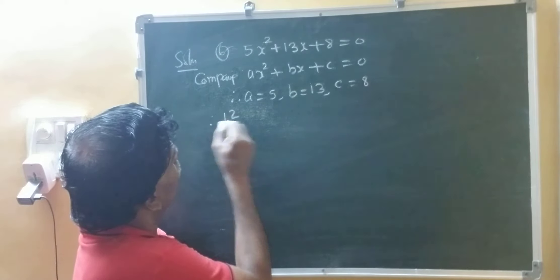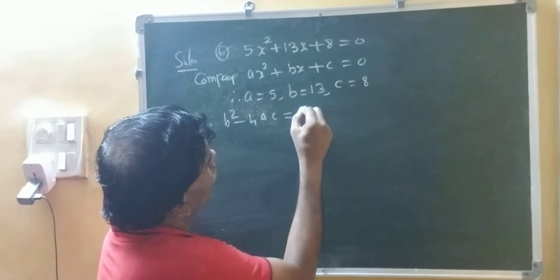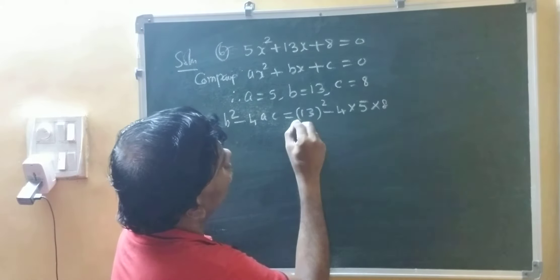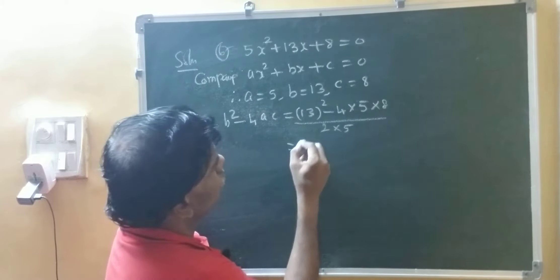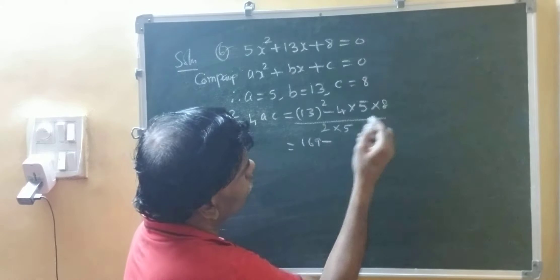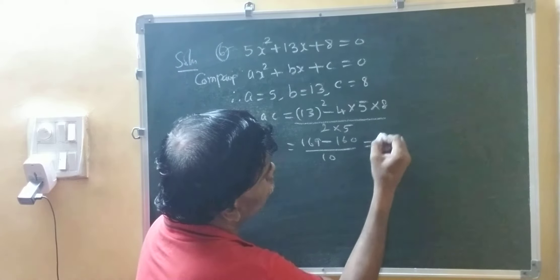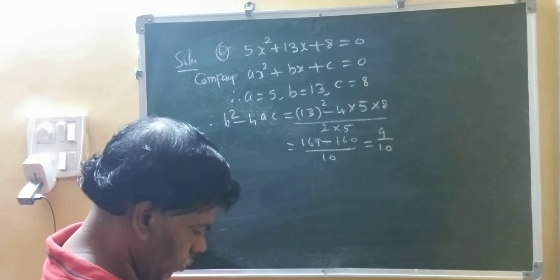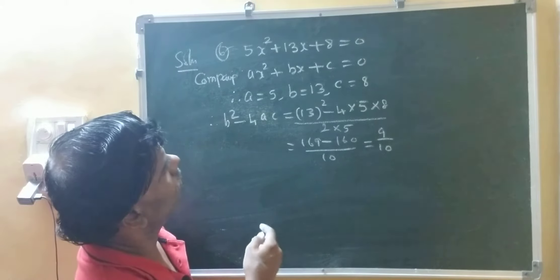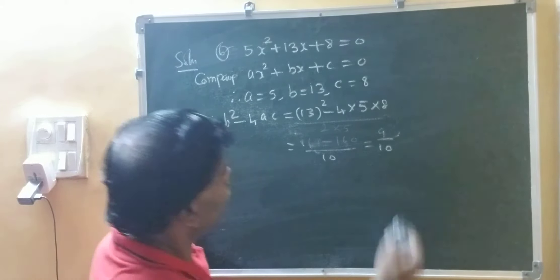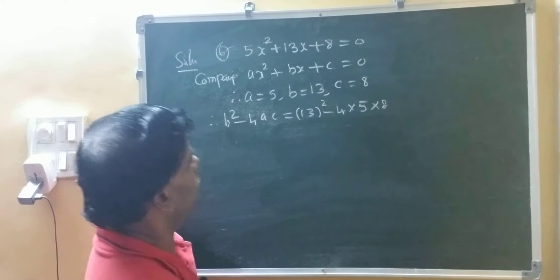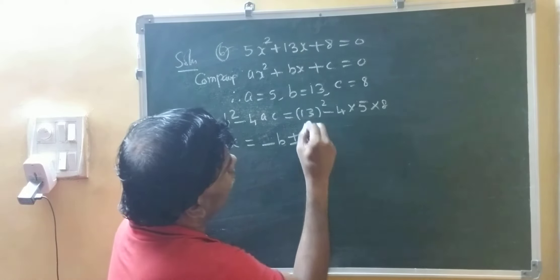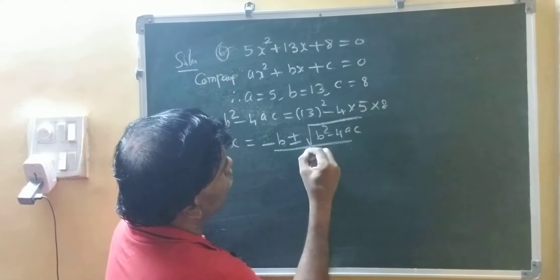We will find out b squared minus 4ac: 13 squared minus 4 into 5 into 8 equals 169 minus 160, which is 9. Now x equals minus b plus or minus root of b squared minus 4ac upon 2a.